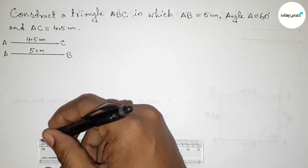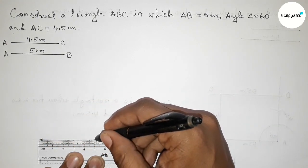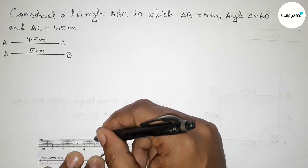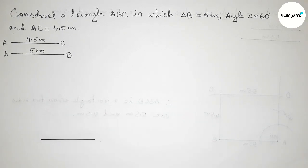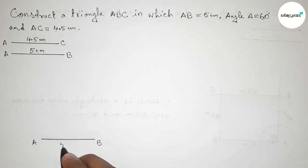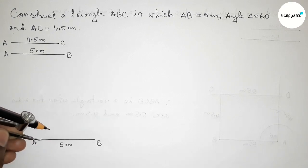Now we draw line segment AB equals 5 centimeter. Starting from 0 to 5 centimeter — perfect. Now taking point A and point B, so AB equals 5 centimeter.